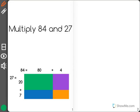Okay mathematicians, this question asks us to multiply 84 and 27 and we're going to use the method down here that they show us.